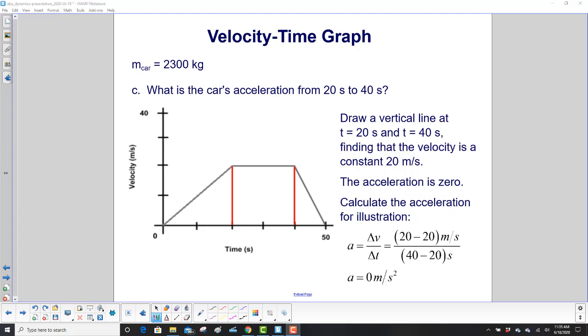Now we need the car's acceleration from 20 to 40 seconds. We'll do the formal method, then we'll show you the shortcuts. Here's our 20 second point, here's our 40 second point. If we use Δv/Δt, we have the final velocity minus initial and final time minus initial time. 20-20 is zero, so there is zero acceleration.